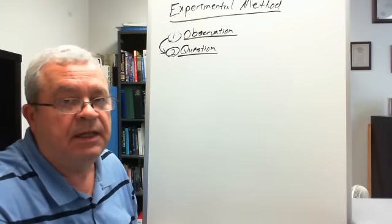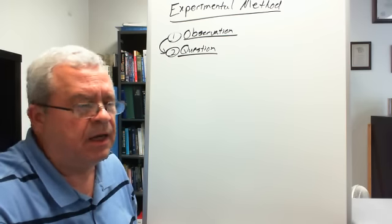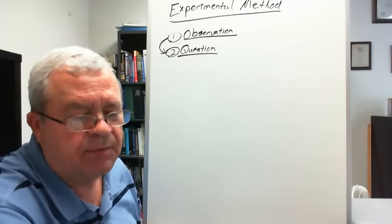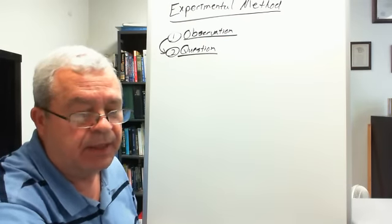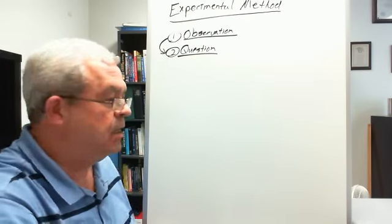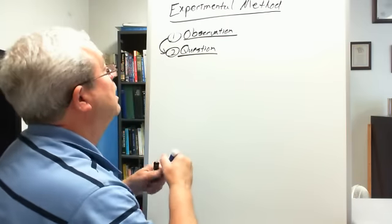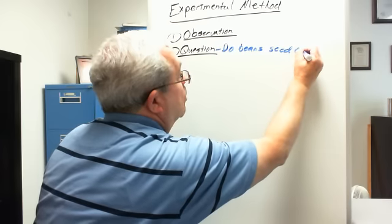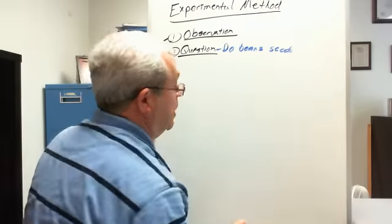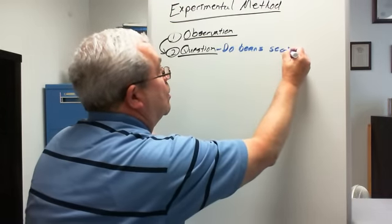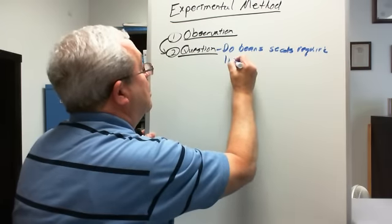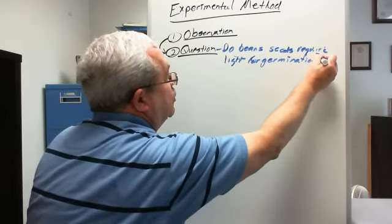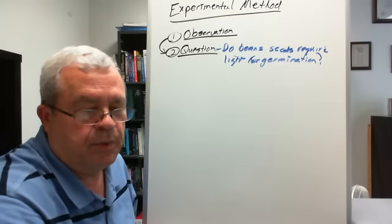Where does the question come from? It comes from the observations. Based on the observations, a question may come to mind. Looking at the experiment about bean seeds, what question could have possibly come to mind? It has to do with bean seeds, light, and germination. So here's a possible question: Do bean seeds require light for germination? That is a possible question that might lead to this simple experiment.